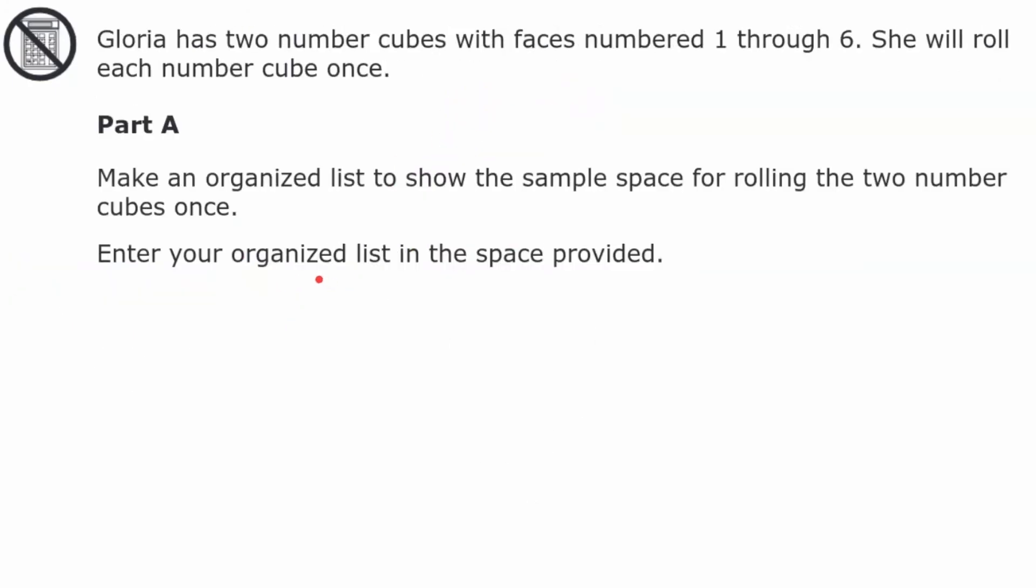Here we have a multi-part open response question. When students take this, they have to show their work or explain their work and a state grader is going to look at their physical work, not just typing a number into a computer. Gloria has two number cubes with faces numbered one through six. She will roll each number cube once. You're asked to make an organized list to show the sample space for rolling the two number cubes. So make sure you show your work and then come back and hit play when you're ready. Go ahead and pause.